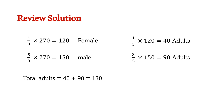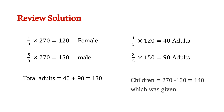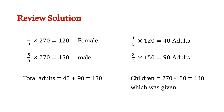If 130 of the attendees were adults and the total number of attendees was 270, then the number of children is 270 minus 130, which gives 140 — and this was the initial information given. This proves that our answer is correct.